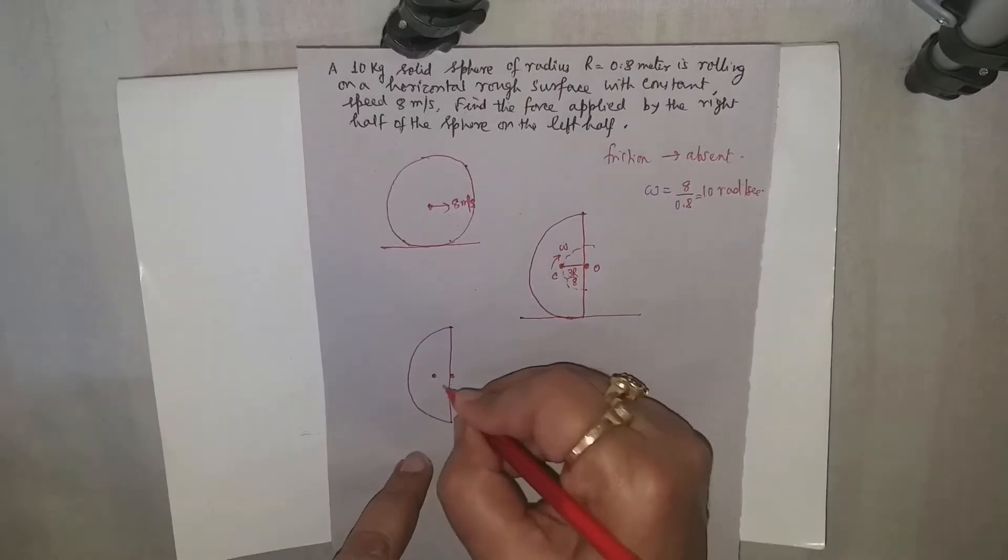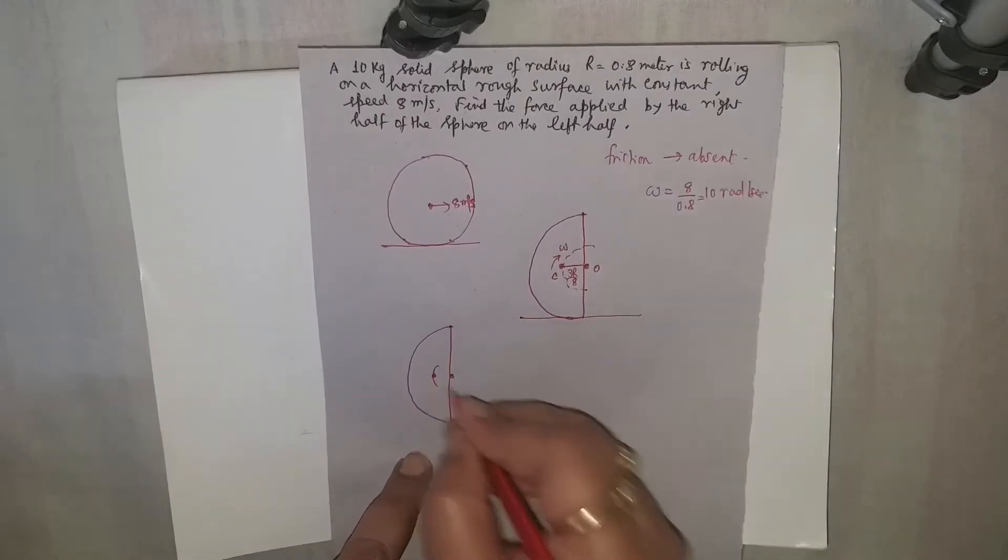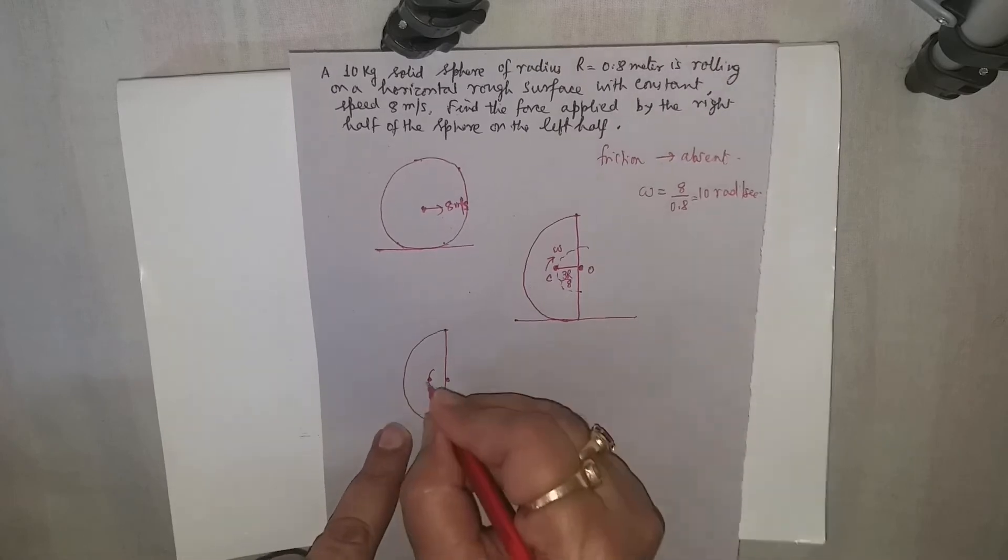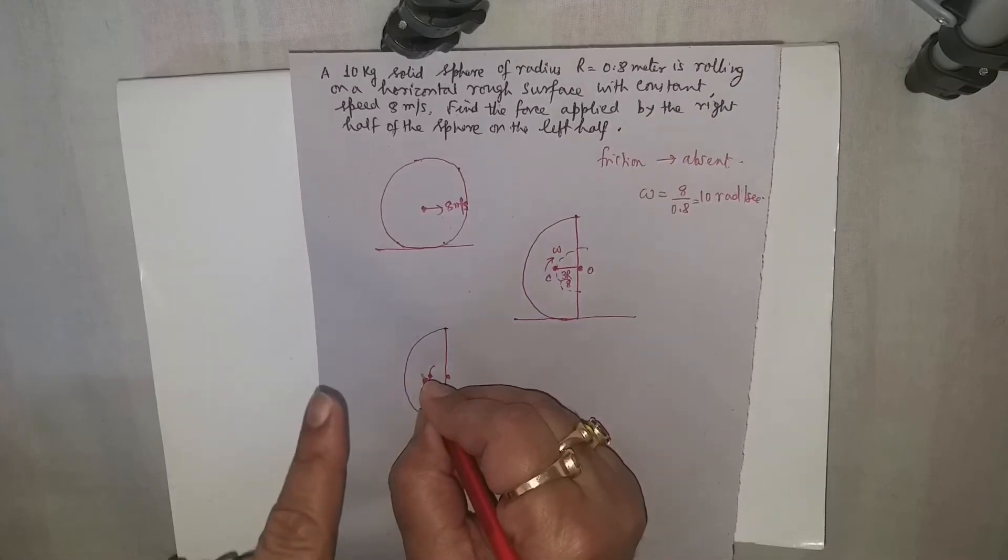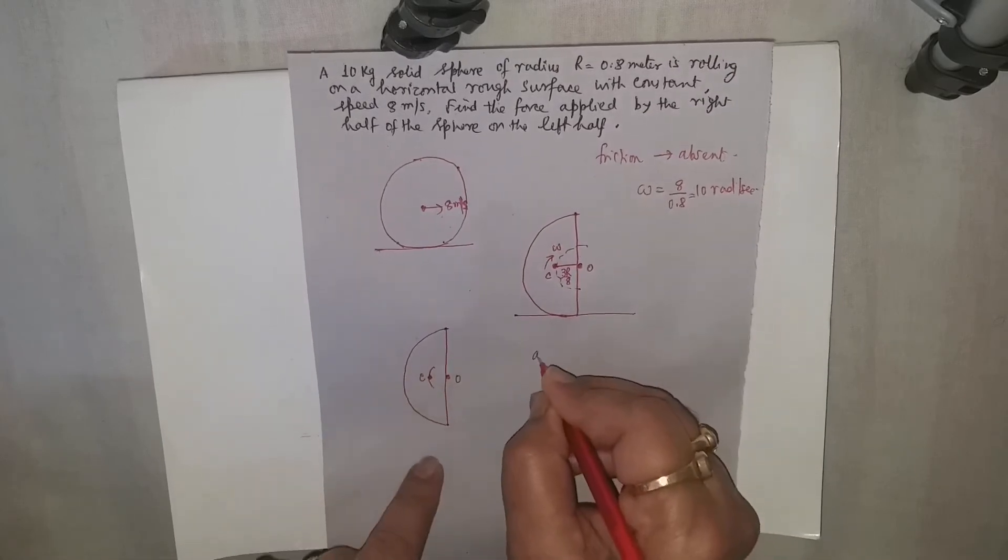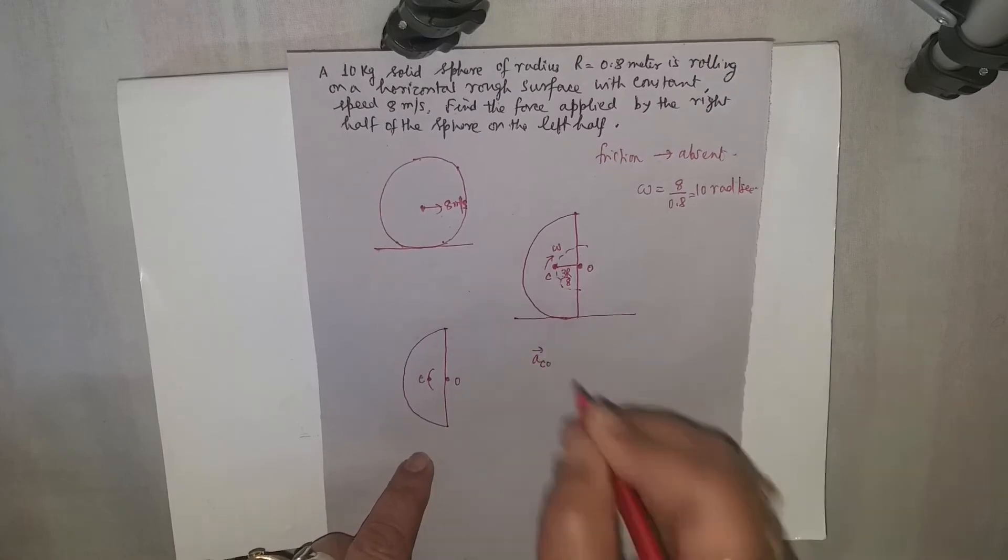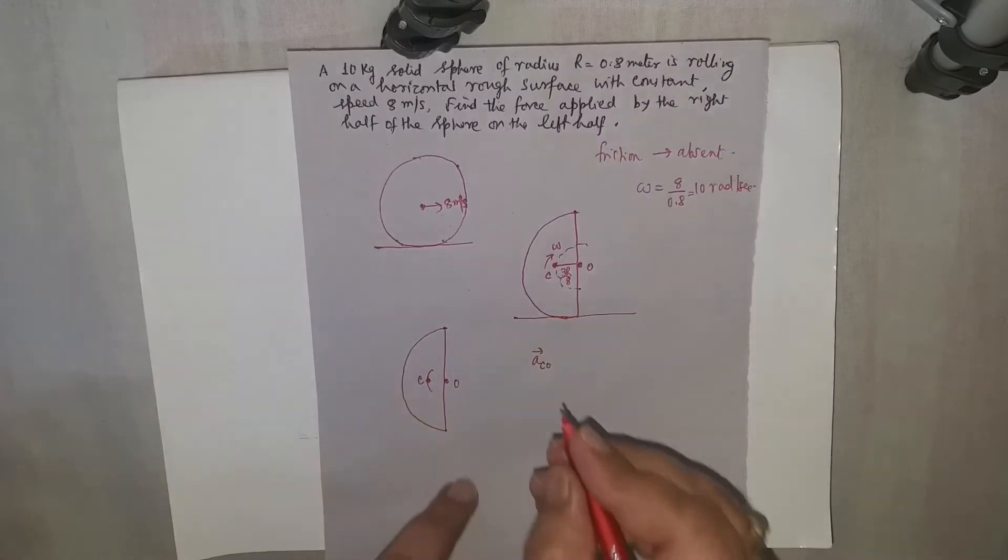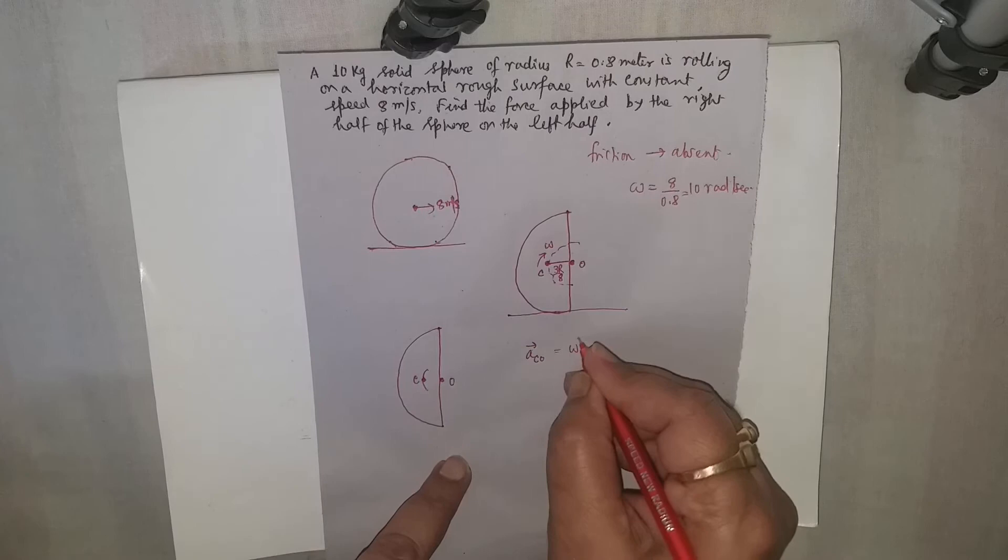Therefore, with respect to this as it is moving, the centripetal acceleration of the center of mass C with respect to O will be along this direction and it will be equal to omega squared into distance.